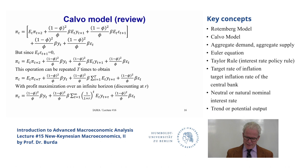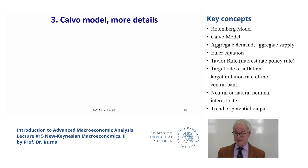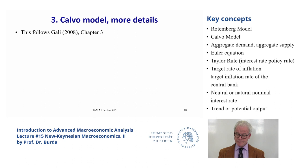Now I'll give you some details of where Calvo got all this from — and it wasn't just Calvo, but also his students, especially Jordi Gali, a very famous economist at Pompeu Fabra in Barcelona who is also Professor Wienkow's thesis advisor. What follows kind of tracks his explication of this model.